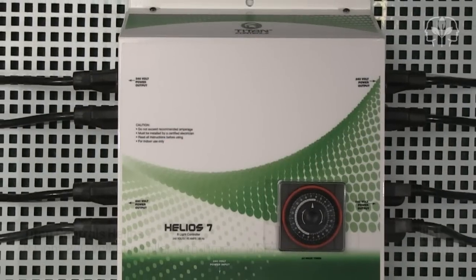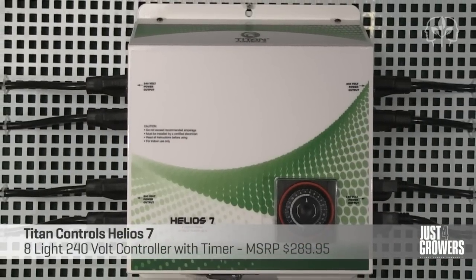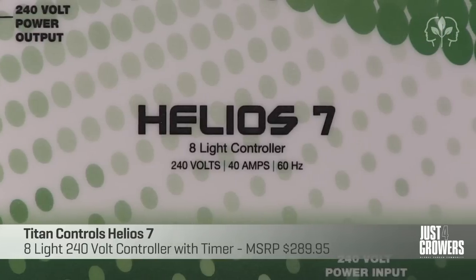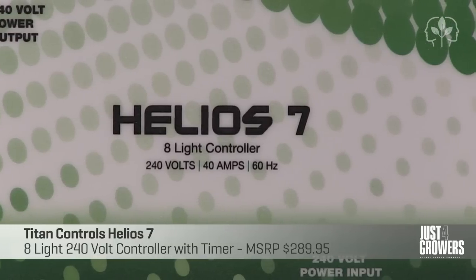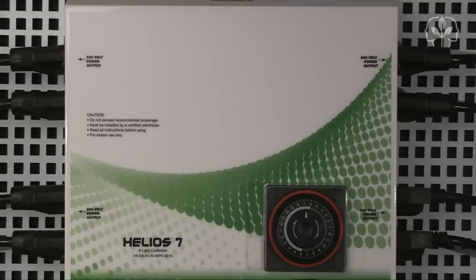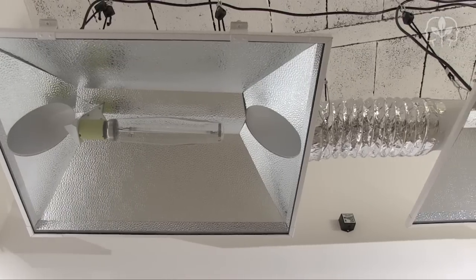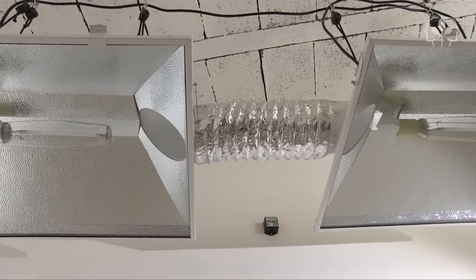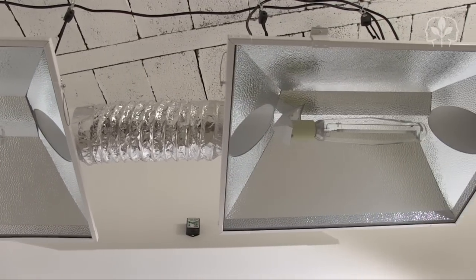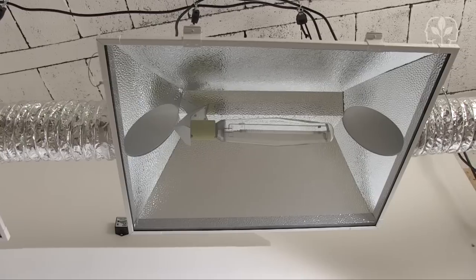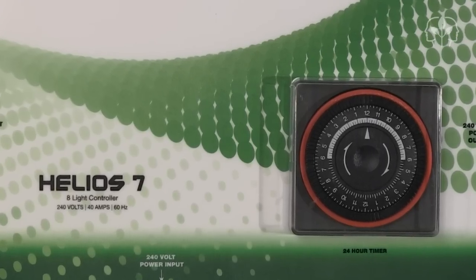This pretty little box is called the lighting controller. This model, called the Helio 7 by Titan Controls, is a serious piece of kit. It can run not just one, but up to 8 1000 watt HID lights. The beauty of a lighting controller is the simplicity and safety it brings to your indoor garden. All of your lights running off one timer. Excellent.